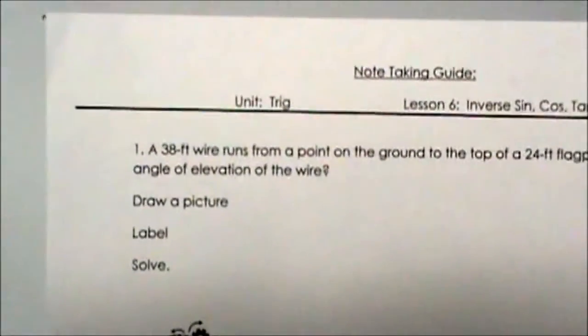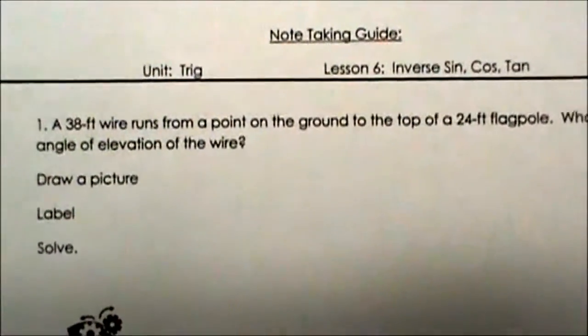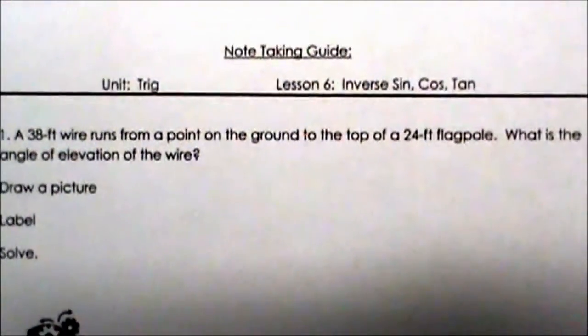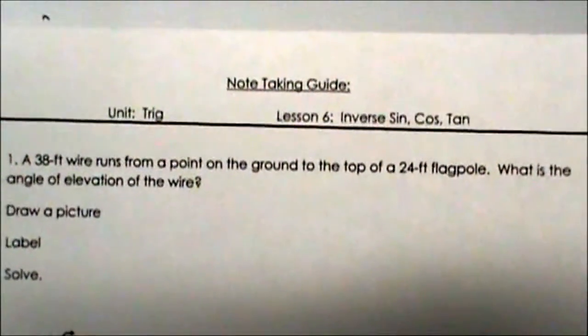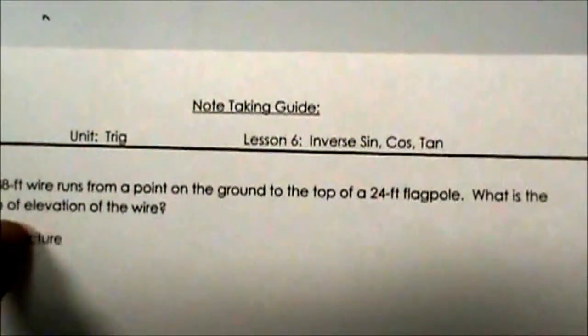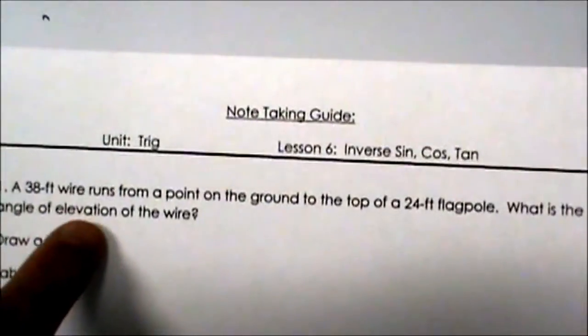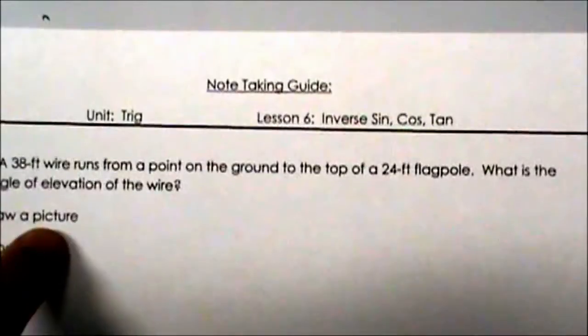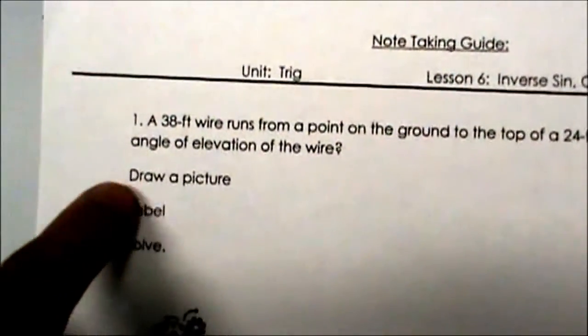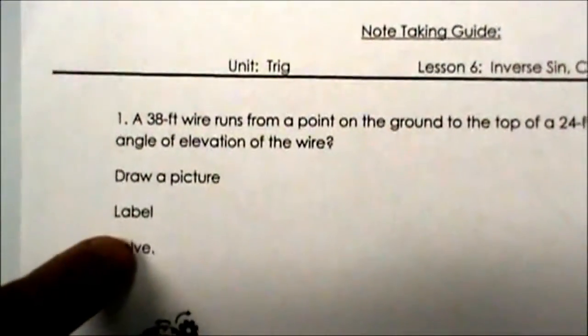So now let's look at our word problem. Let's read it through together. A 38 foot wire runs from a point on the ground to the top of a 24 foot flag pole. What is the angle of elevation? We don't know the angle. That means we are going to have to use the inverse button. First thing we need to do is draw a picture. Then we are going to label what we know and then we are going to set up and solve it.